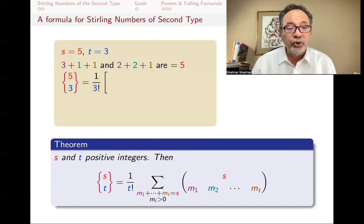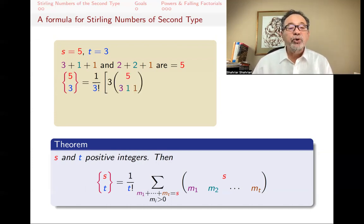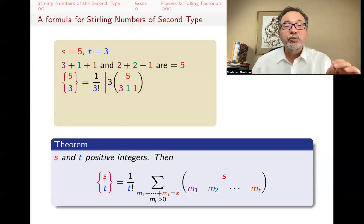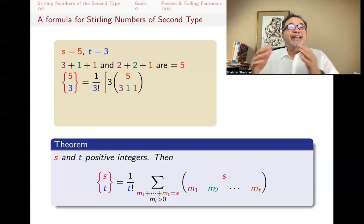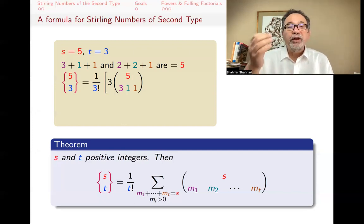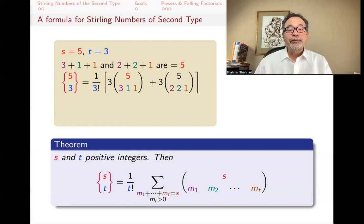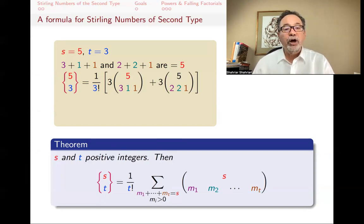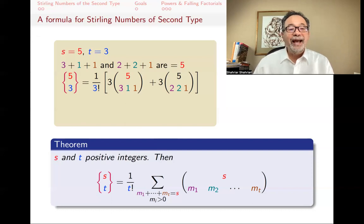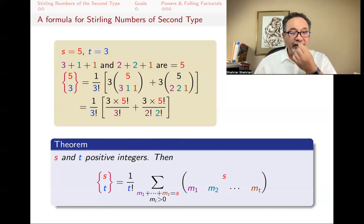For example with s=5 and t=3: the positive compositions of 5 into 3 parts are (3,1,1) and (2,2,1), each in three ordered arrangements. So s brace 3 equals (1/3!) times [3 times (5 choose 3,1,1) plus 3 times (5 choose 2,2,1)], giving 25 as expected.